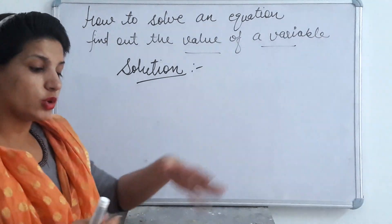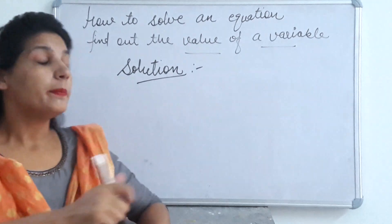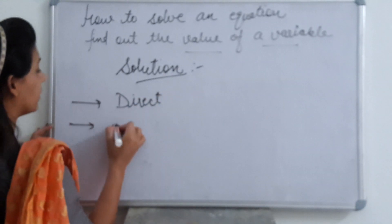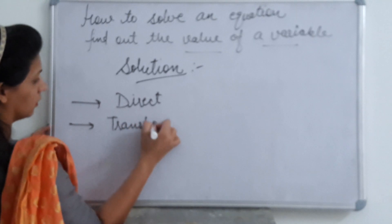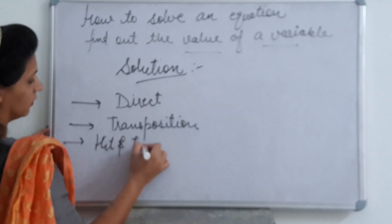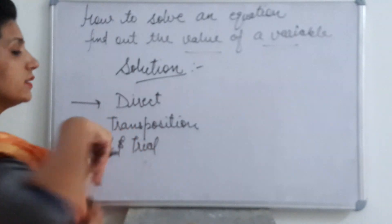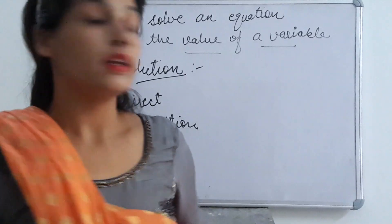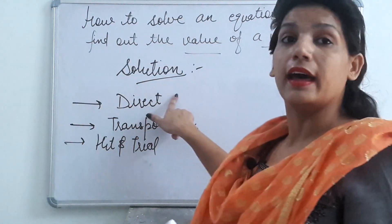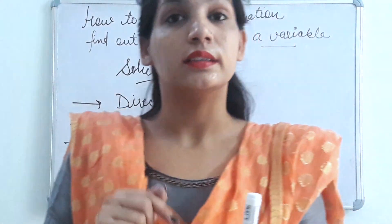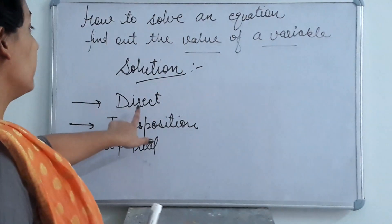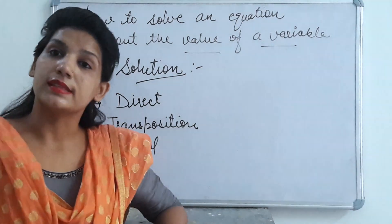We have three commonly used methods to solve an equation. The first one is the direct method, the second is transposition, and the third is the hit and trial method. The most commonly used one is the direct method.